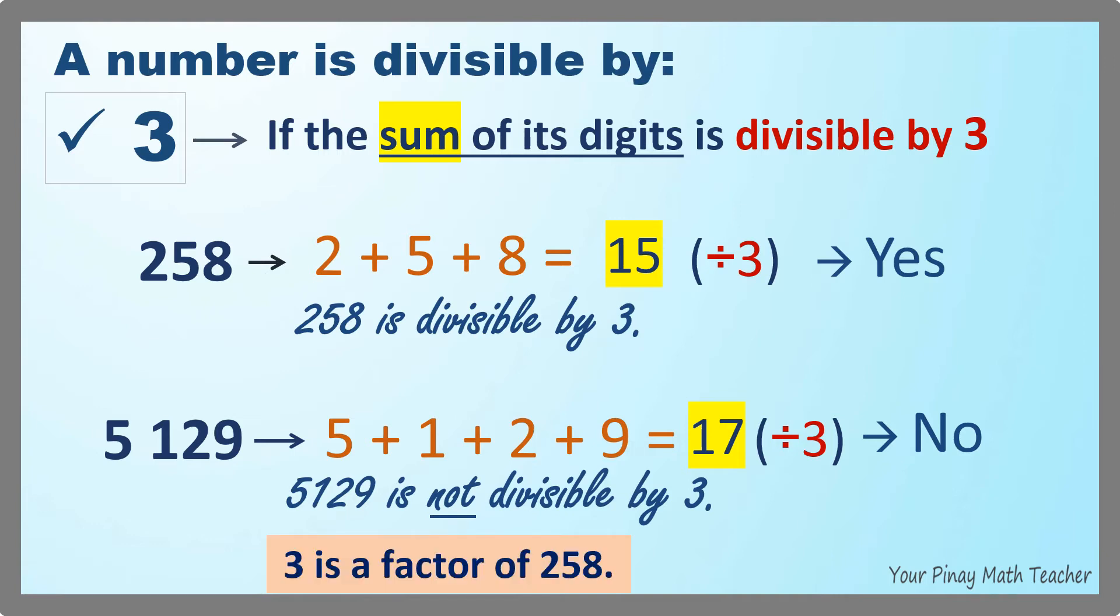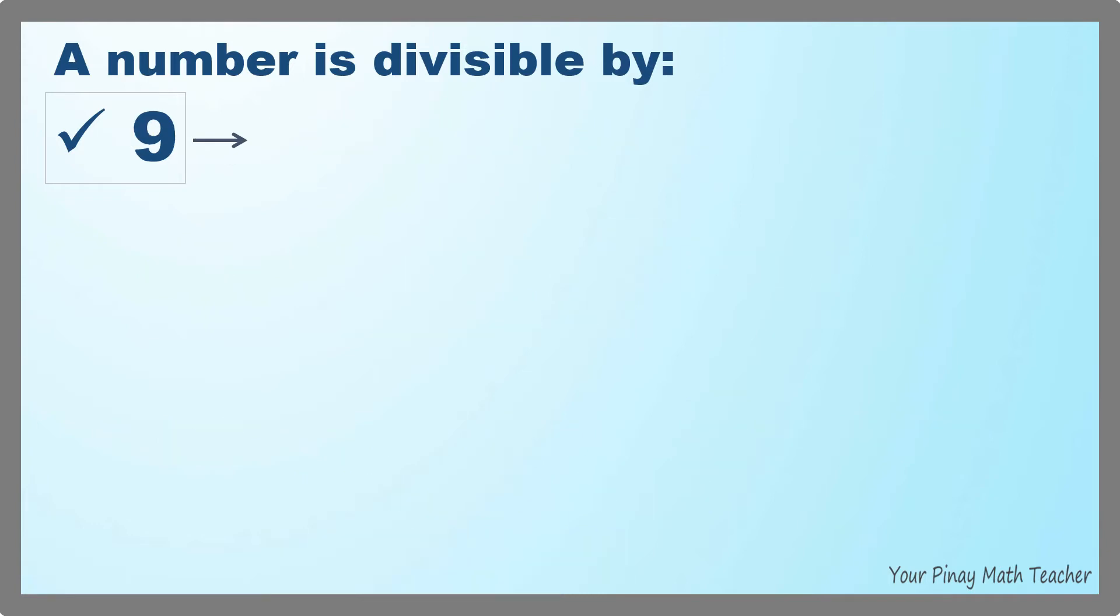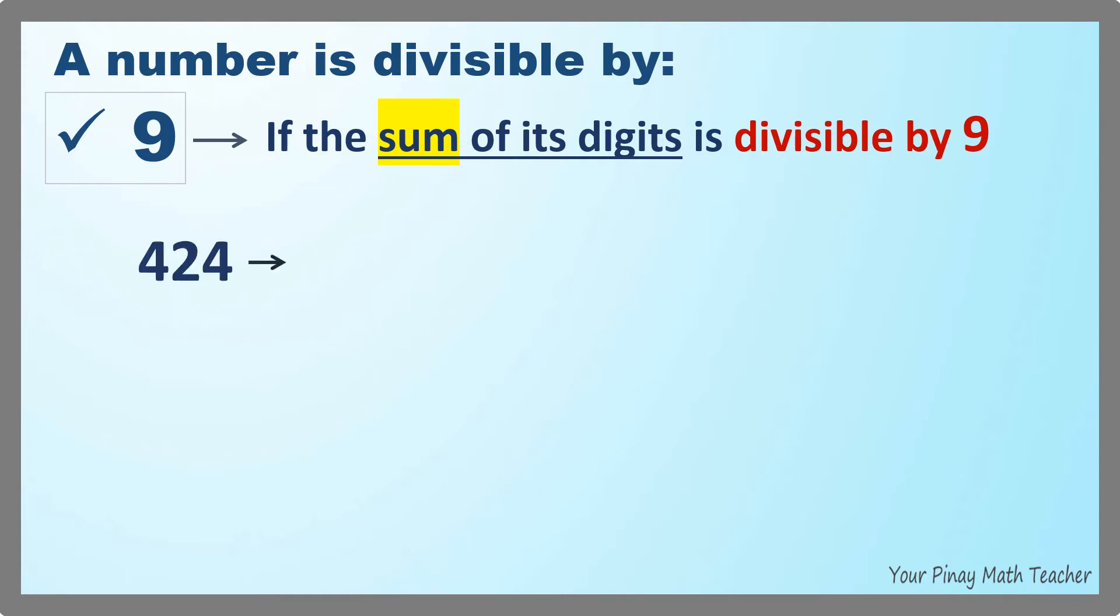So 3 is a factor of 258. How about the divisibility rule for 9? A number is divisible by 9 if the sum of its digits is divisible by 9.